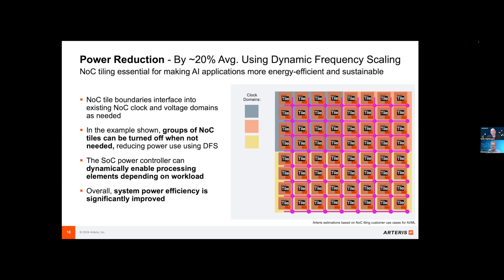The advantages of the NOC tiling solution include simplified design complexity. The modular nature of NOC tiling simplifies the overall design process, allowing for easier handling of complex systems, reducing interconnect challenges, and improving routing efficiency — at least to reduce latency. NOC tiling optimizes data flow between processing elements, minimizing communication delays and improving overall performance for latency-sensitive applications. We've also got flexibility and reusability — the tile-based approach provides flexibility in design customization, while reusing verified tiles ensures reliability and reduces risk. And there's adaptability for various workloads: NOC tiling can be adapted for different AI designs — NPUs, TPUs, GPUs — providing versatility across a range of applications.